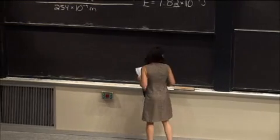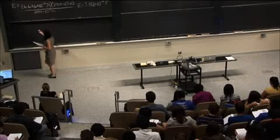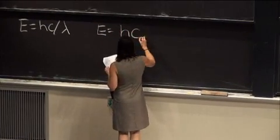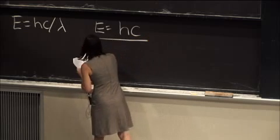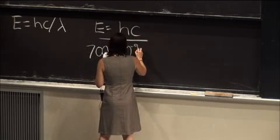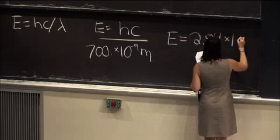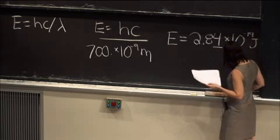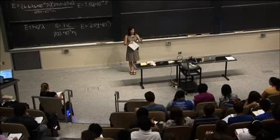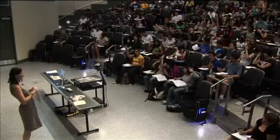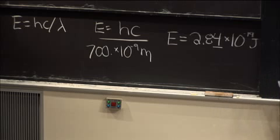For the red laser pointer at 700 nm: E = hc/λ = 2.84×10⁻¹⁹ joules per photon. Since the zinc work function is 6.9×10⁻¹⁹ joules, there is not enough energy in a single photon to eject an electron from the zinc surface.